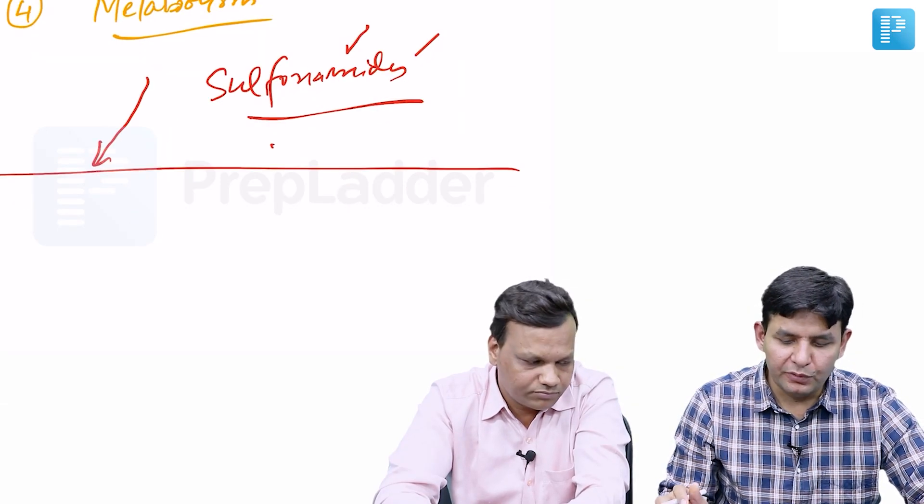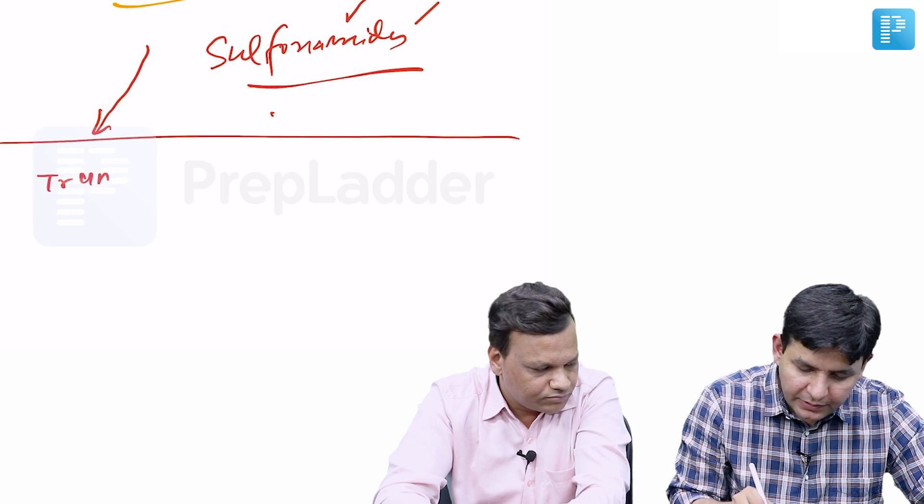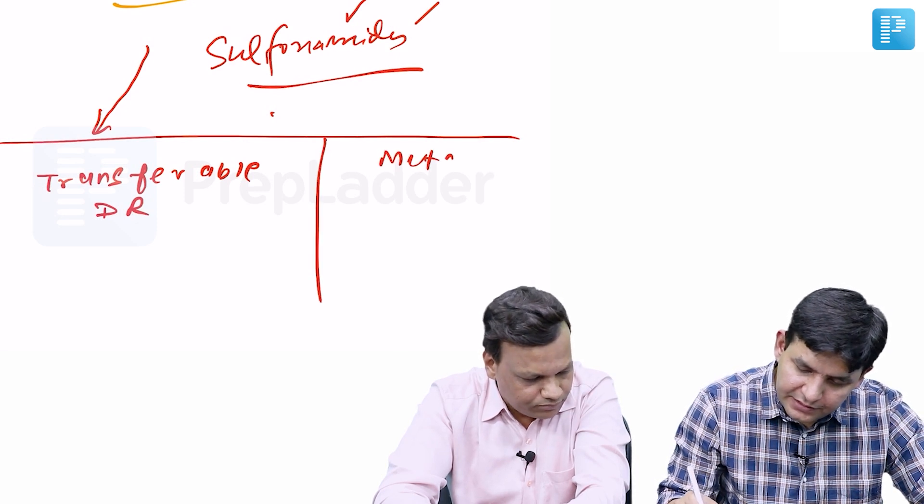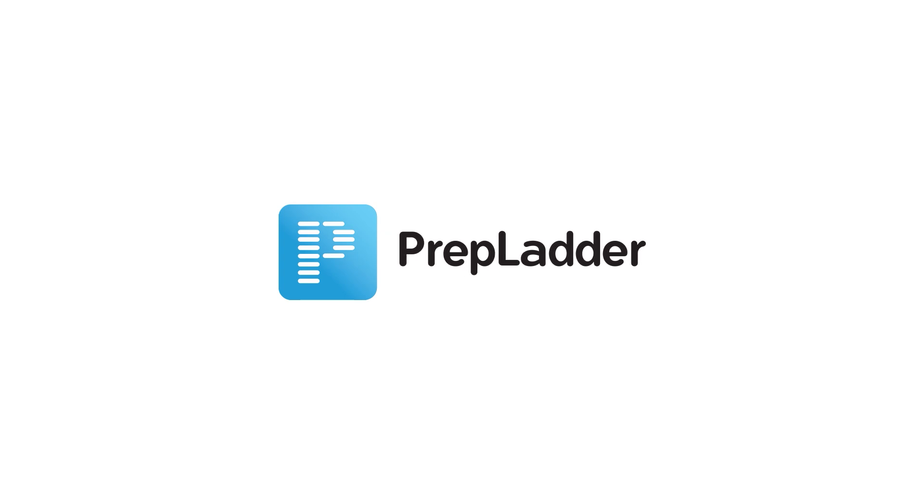Hello everyone, this is Dr. Govindra Agar and along with me is Dr. Sonu Pangar. We will be discussing in this video about antimicrobial drug resistance. Previously, people died from infectious diseases because we did not have antibiotics, but now people are still being killed from infectious diseases even though we have antibiotics. The reason is the development of drug resistance, as most organisms are now becoming resistant to already available drugs.